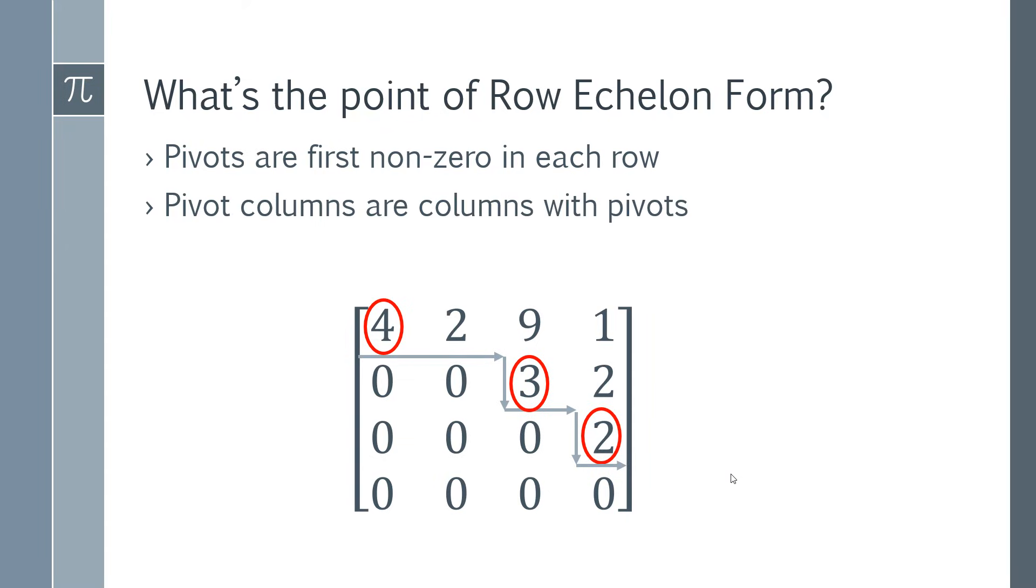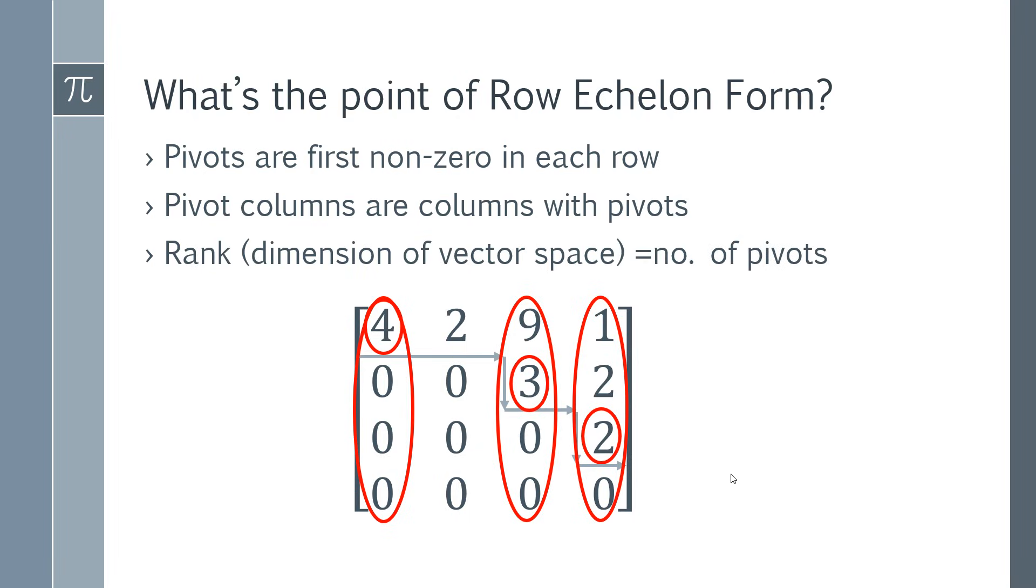Pivot columns, unsurprisingly, are the columns with pivots, so you can immediately detect and identify all of your pivot columns. The next thing is that the rank, which tells you the dimension of a vector space, is simply equal to the number of pivots. We can look at how many pivots we've got here. I've circled them. We've got three, so you know the rank is three. You can tell that immediately just by looking at it.